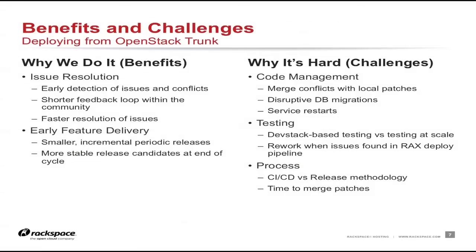One of the goals of continuous integration is to do smaller incremental releases. Instead of waiting until Grizzly or Havana are completed and then deploying and finding all the issues at that point, we want to do smaller releases that provide feedback a lot sooner. This ultimately benefits not just us internally but also the overall release cycle — because if we find issues up front and bring them to trunk, when the release is completed, many of those issues will already have been resolved.